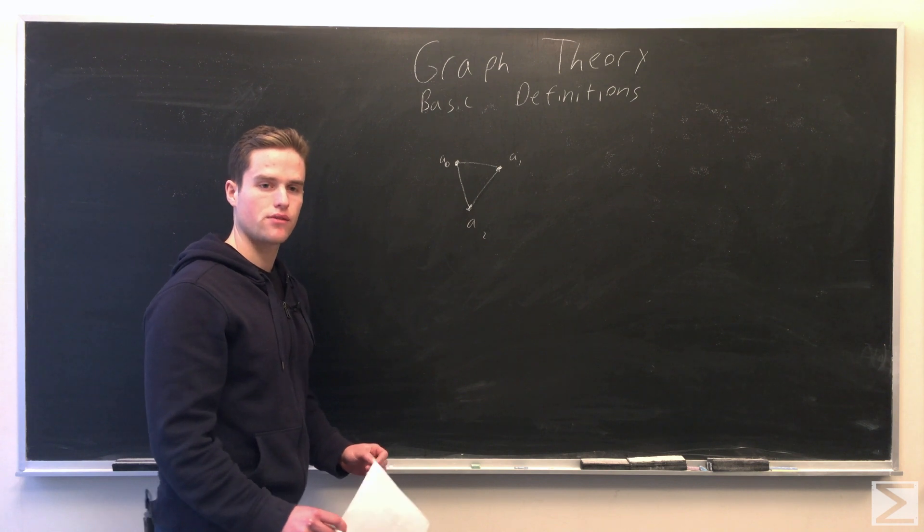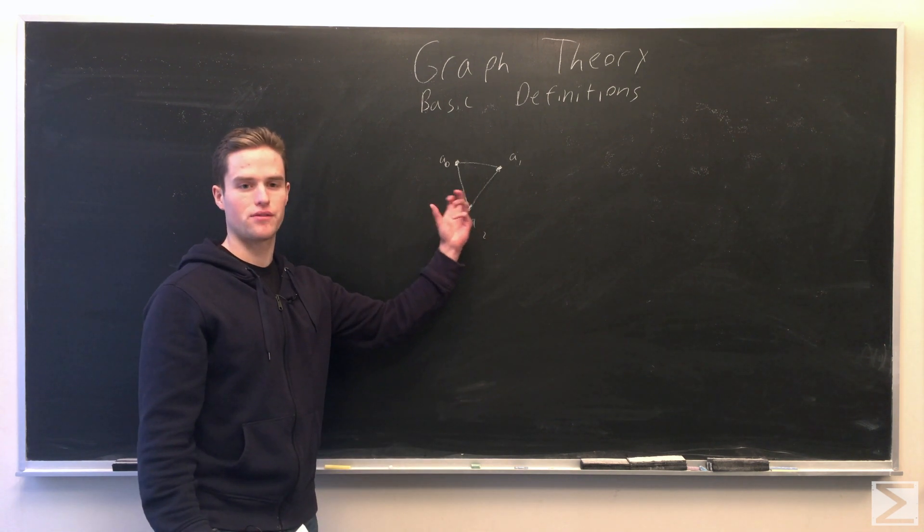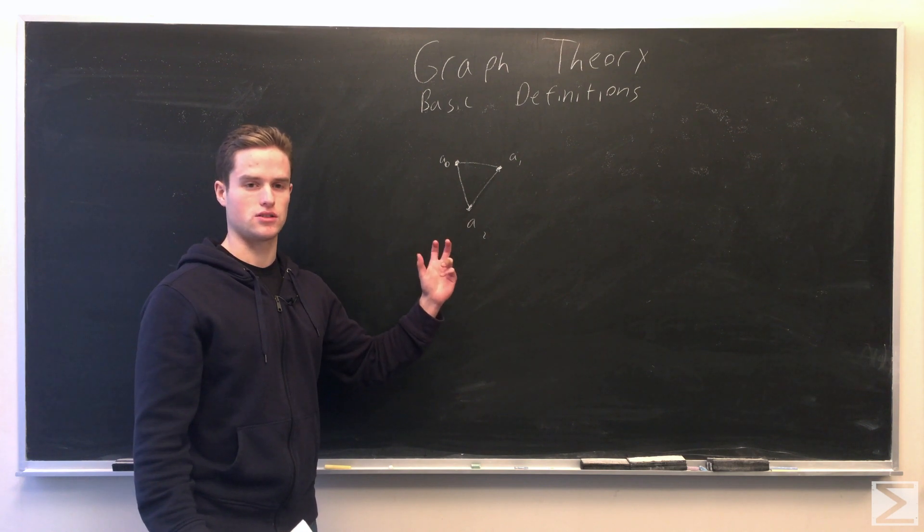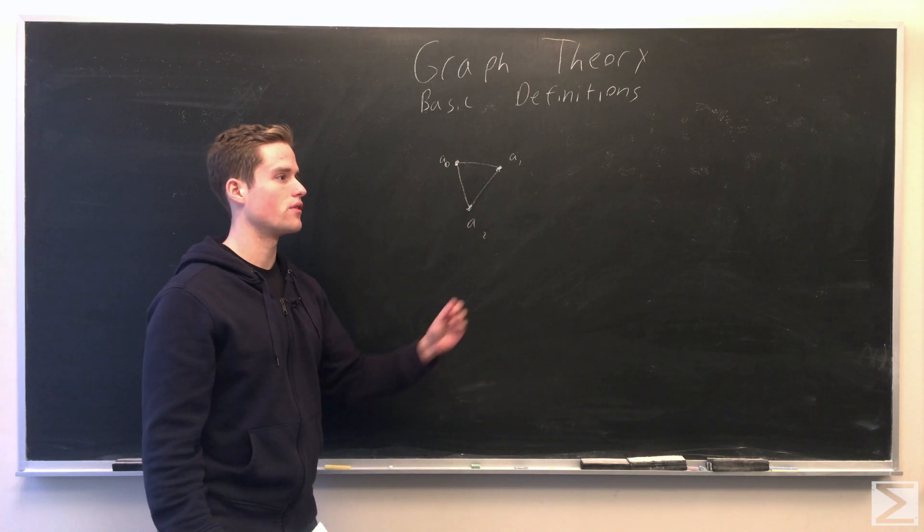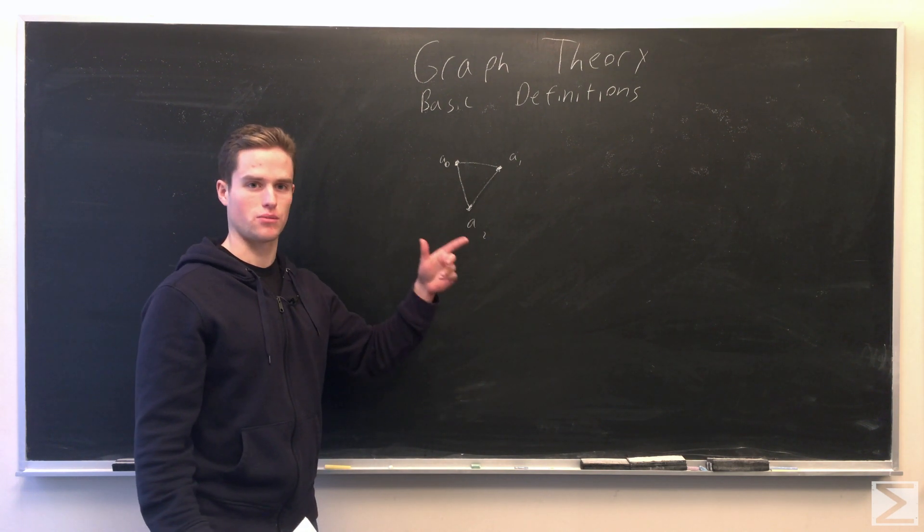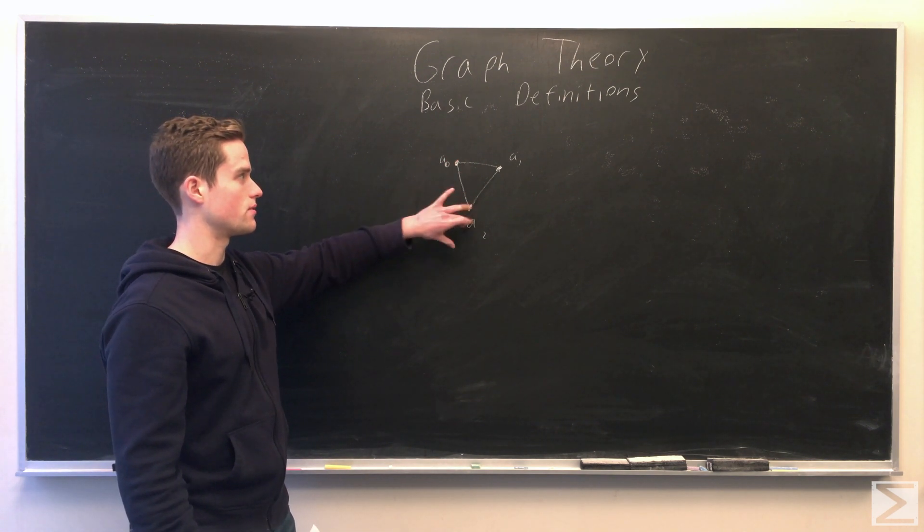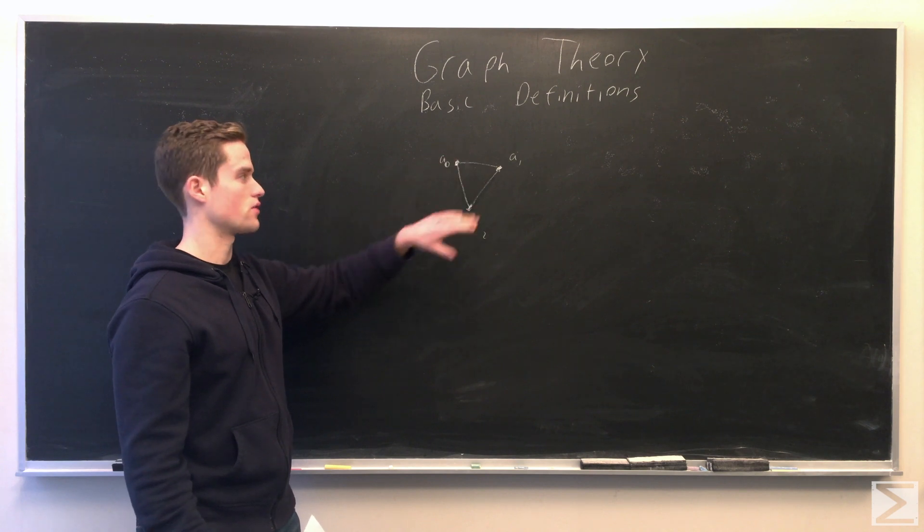A subgraph of a graph is a graph whose vertices is a subset of some bigger graph and whose edges are a subset of the edge relations of the bigger graph. So, say, A0 or A2 with the edge between them, this thing would be a subgraph of our triangle here.